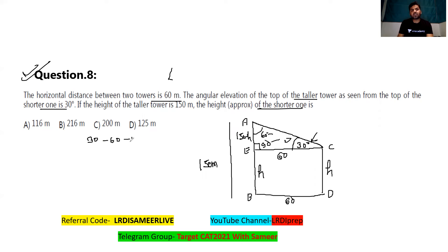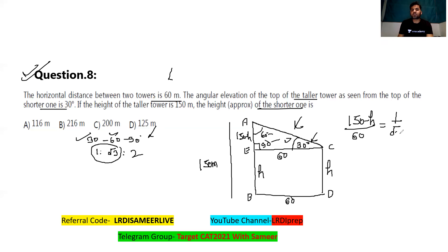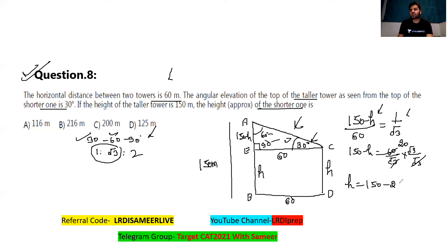In a 30-60-90 triangle, by the sine rule the side ratio is 1 : √3 : 2. The side opposite 30° is (150 − H) and the side opposite 60° is 60, so (150 − H) : 60 = 1 : √3. Solving: 150 − H = 60/√3 = 20√3. With √3 ≈ 1.732, 20√3 ≈ 34, so H ≈ 150 − 34 = 116. Option A is the correct answer.